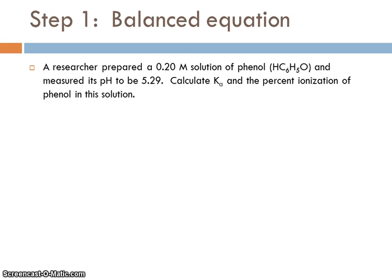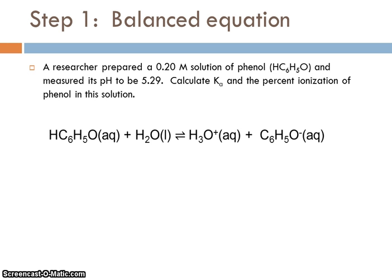Okay, so the first thing we need to do is write a balanced equation. Now, phenol, we were given the formula. You're not expected to know that. It's going to react with water to form the hydronium ion and the anion. You need to recognize here that the way the phenol is written, it's a monoprotic acid. So, we're going to have the acid lose one hydrogen ion, transfer it to the water, and we get our hydronium ion and the anion, the conjugate base.